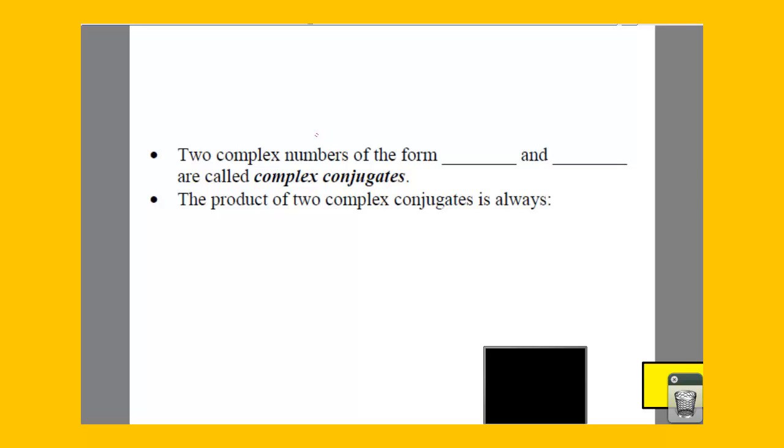Anytime we have two complex numbers of the form a+bi and a-bi, these are going to end up being complex conjugates. Notice one's a plus, one's a minus. The product of two complex conjugates is always a real number. The reason for that is because you end up with a difference of squares.